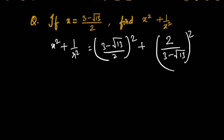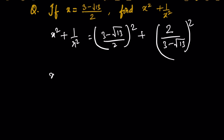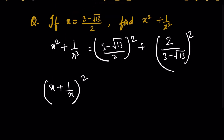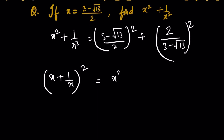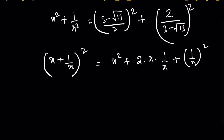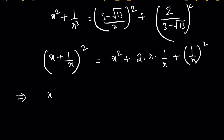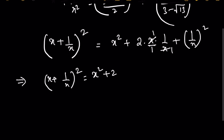What we should do first is use the algebraic identity: (a + b) whole squared = a squared + 2ab + b squared. So (x + 1/x) whole squared equals x squared plus 2 times x times (1/x) plus 1/x squared, where the 2ab term gives us 2.